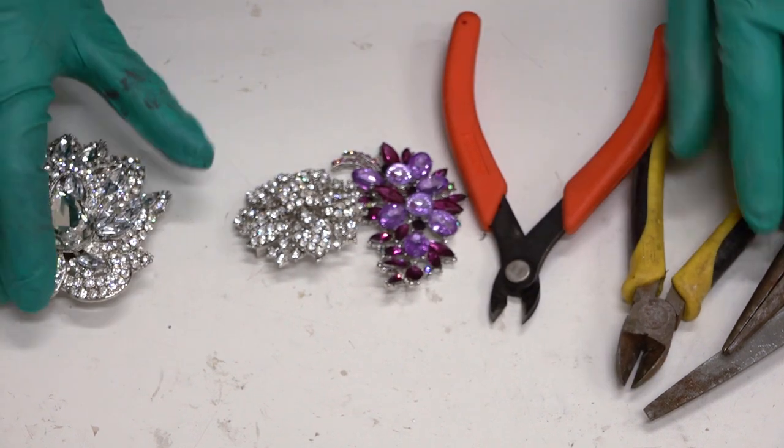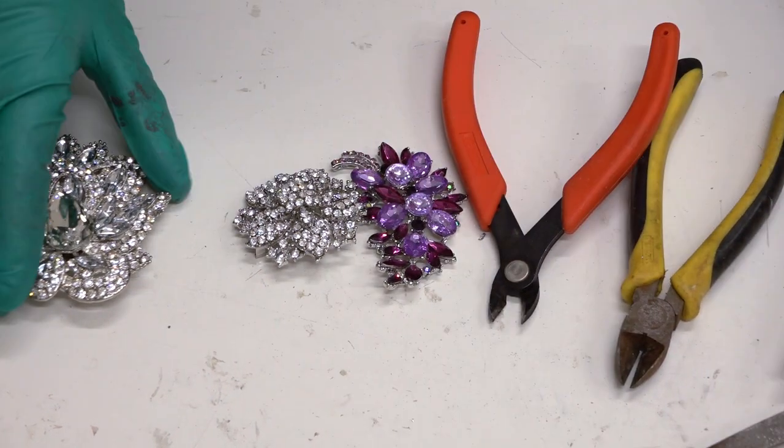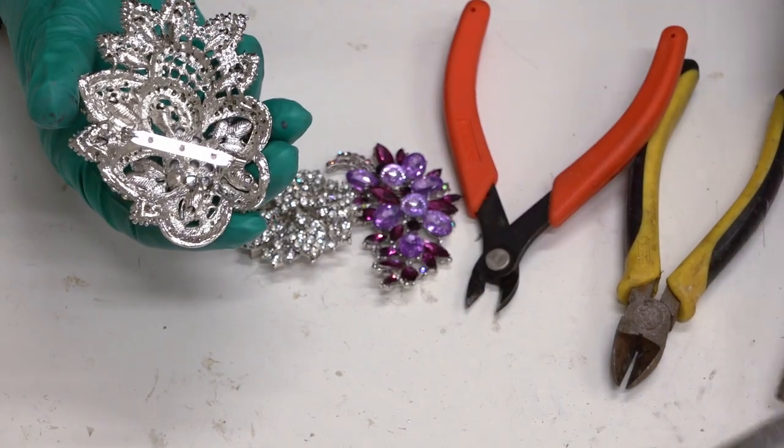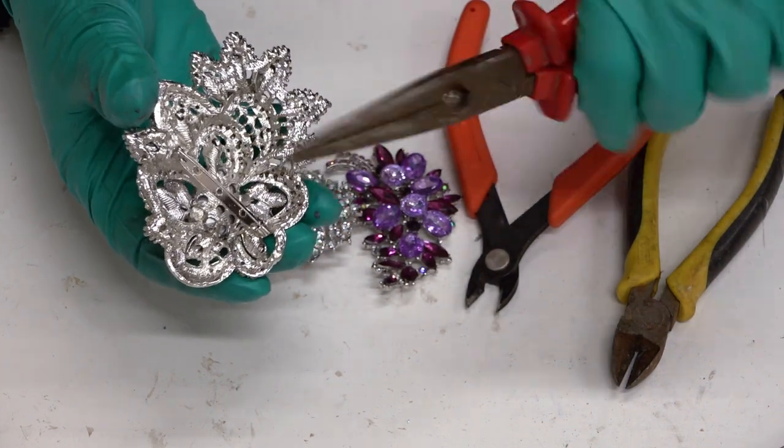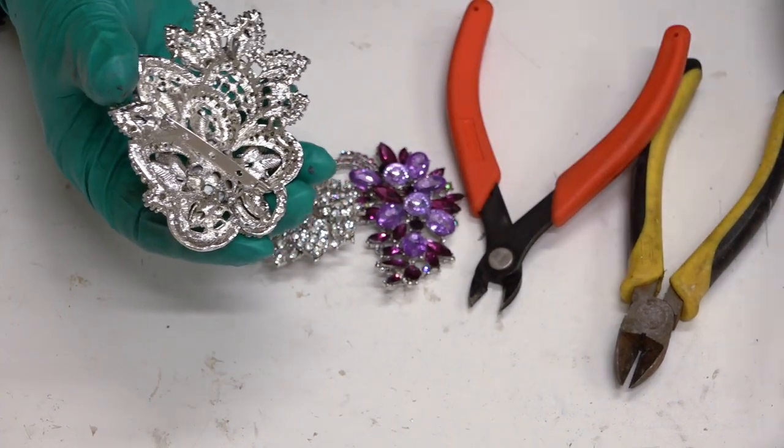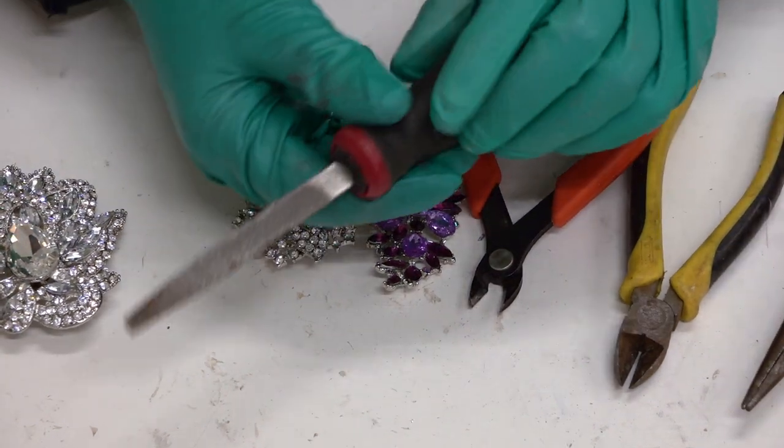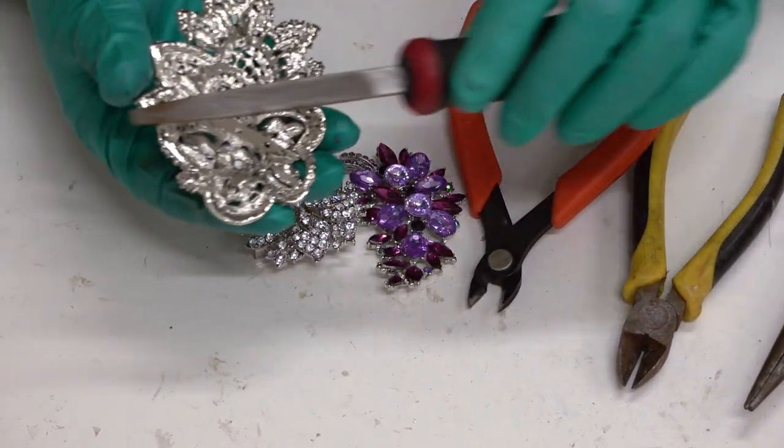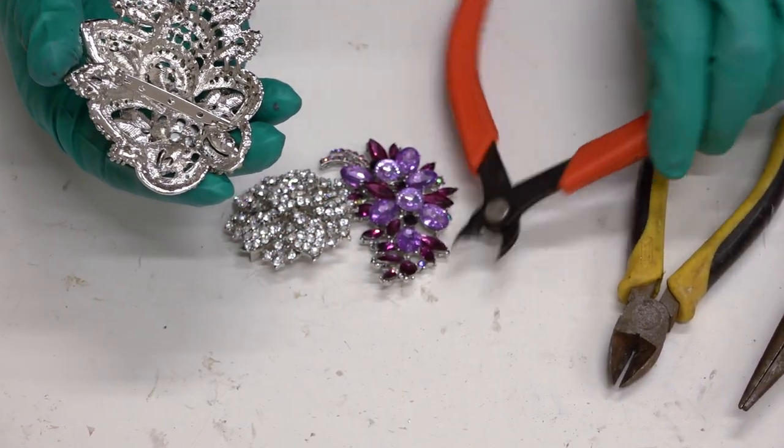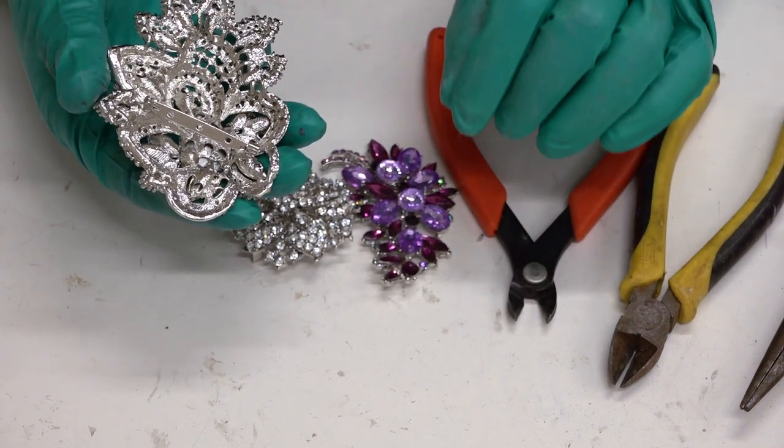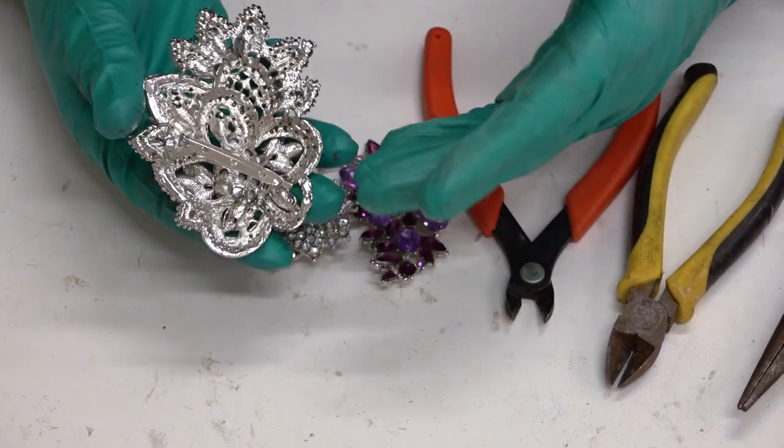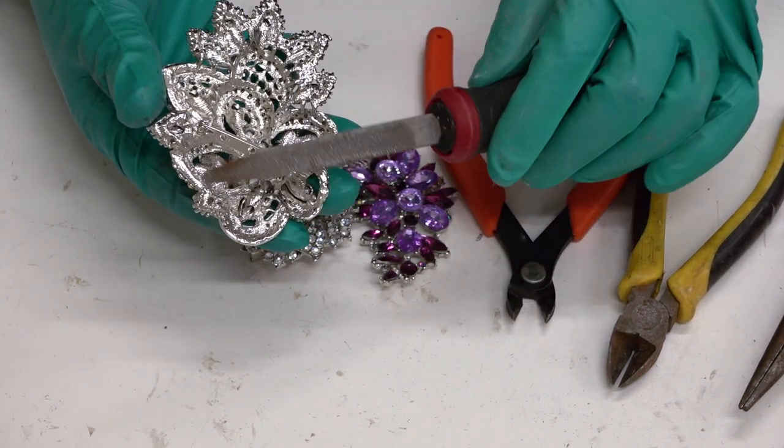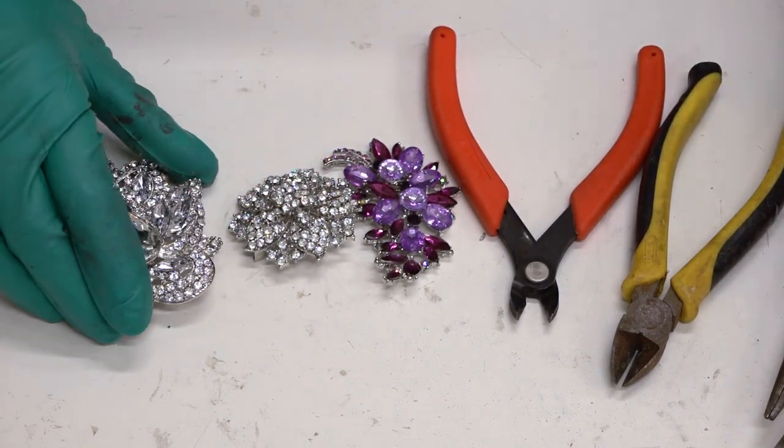I also like to use long nose pliers because sometimes on brooches and other bits of jewelry you can cut off one side but you may not be able to cut off the other side. So these allow you to get in there and bend backwards and forwards to actually break it off. And then if that happens then you can use a flat metal file. And this allows you then to actually file down any bit of metal that you have left. And that's the same thing when you've used your flush cutters. If there's a little bit of metal you have left that's going to stop you from actually adhering this down flat, then you can use your flat file to actually take that bit of extra metal off.